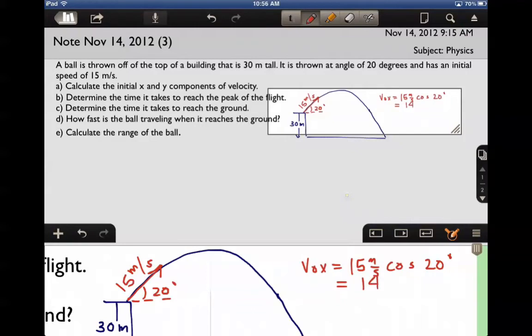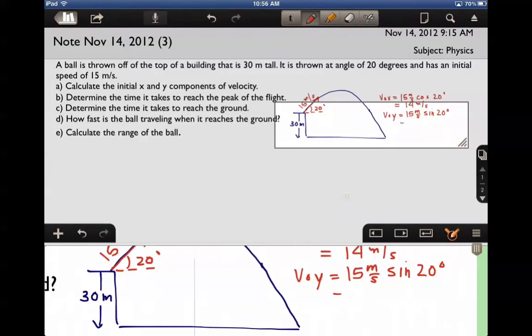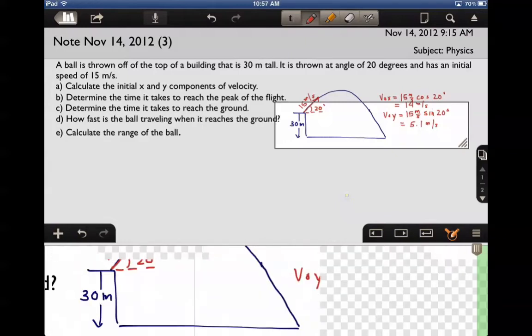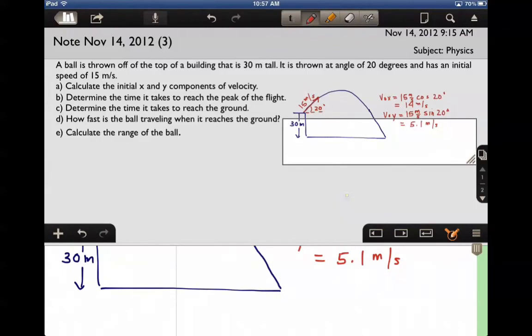And V naught Y will be 15 meters per second times sine of 20 degrees, which is 5.1.